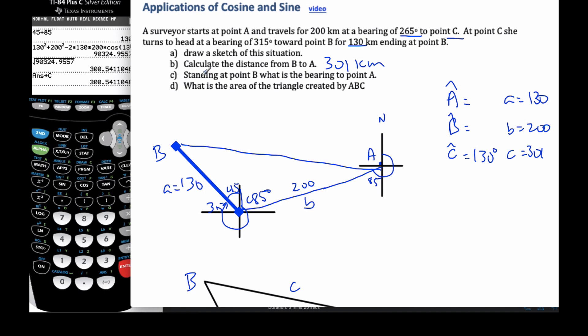Then it says standing at point B, what is the bearing to point A? So I want to know if I'm standing here, what is the bearing this way? So I need to get 90 plus some middle value here. In order to do it, I need to get one of my angles. And if I get this angle or this angle, it will help me out. The information I have looks like I can use, find either of them.